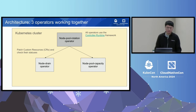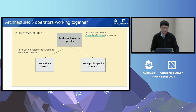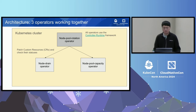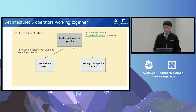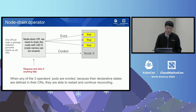Here's the high-level architecture. We have three operators working together. The first is called the node pool rotation operator — the central operator coordinating upgrades. The other two are called the node drain operator and the node pool capacity operator. The node pool rotation operator interacts with the other two via custom resources, patching or creating CRs and checking their statuses. All operators are built using the controller-runtime framework, making it easy to define the CRs they watch and the reconciliation loops.